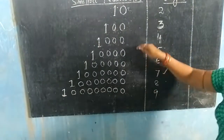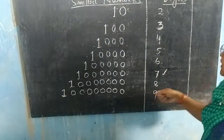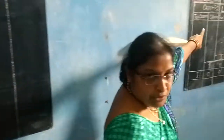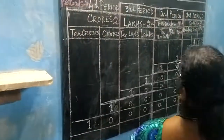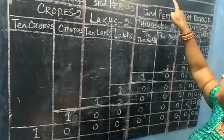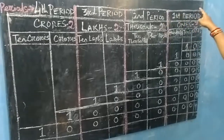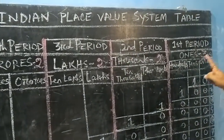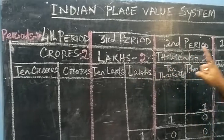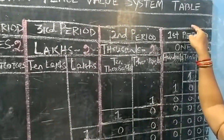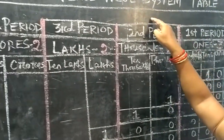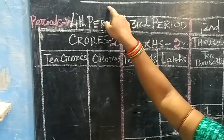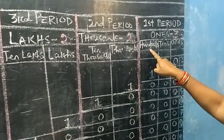For naming these numbers and putting commas, look at the QR code. Here is the Indian place value system table. In this table there are 4 periods: 1st period, 2nd period, 3rd period and 4th period.